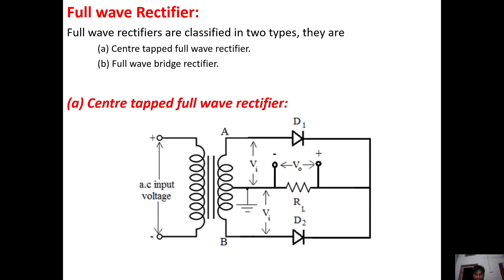The center tapped full wave rectifier has two diodes. By using center transformer, applied input voltage appears at point A, and the reverse signal appears at point B.